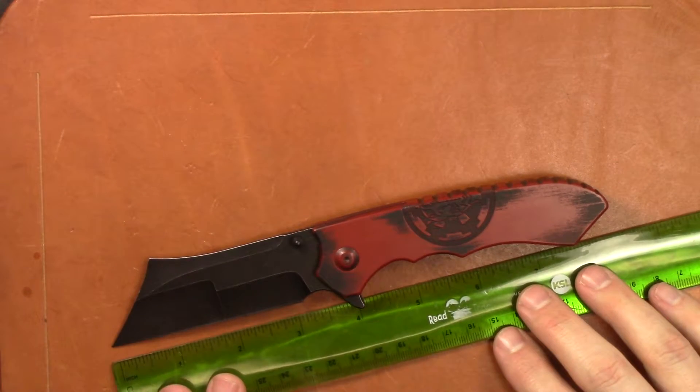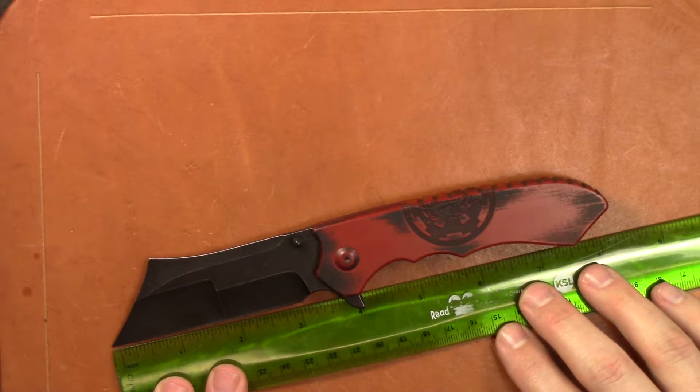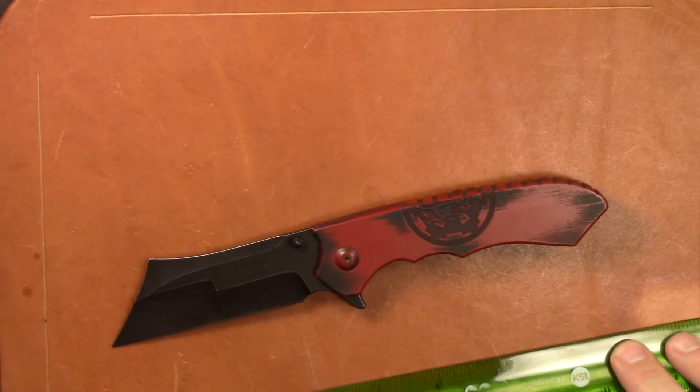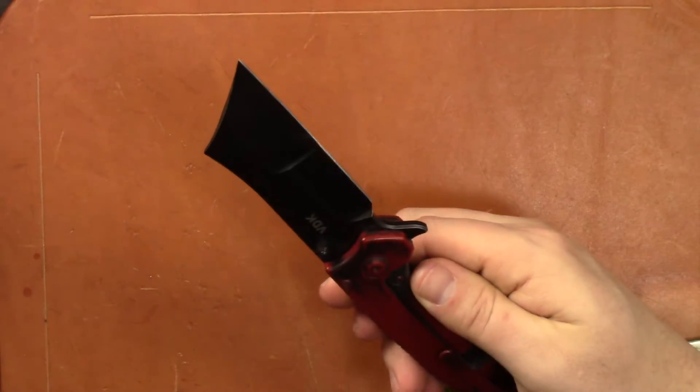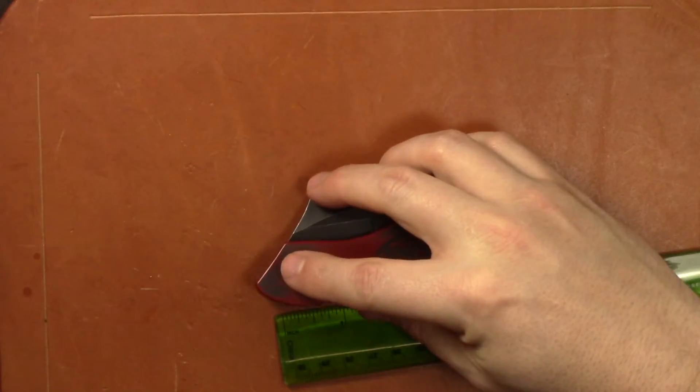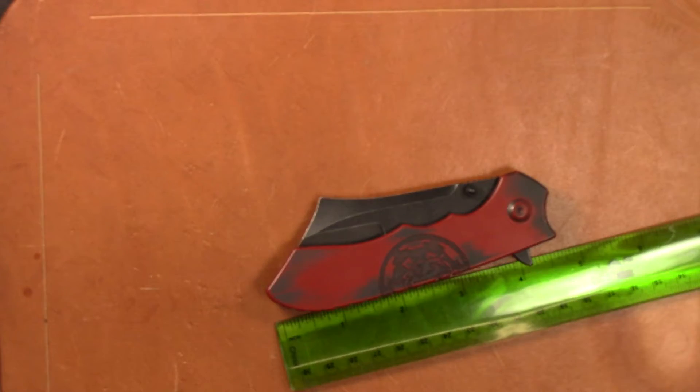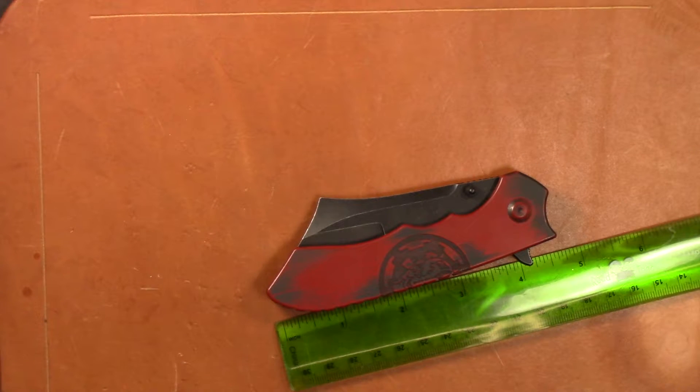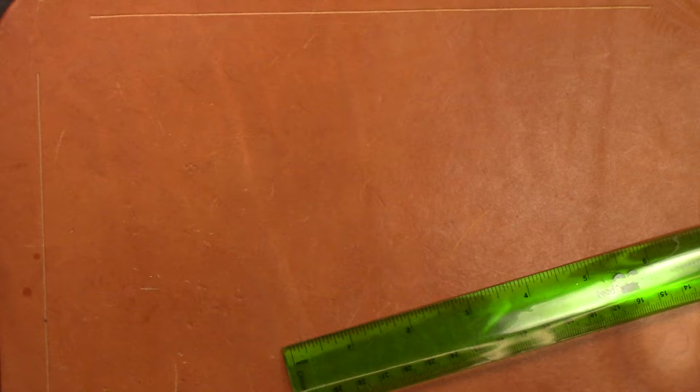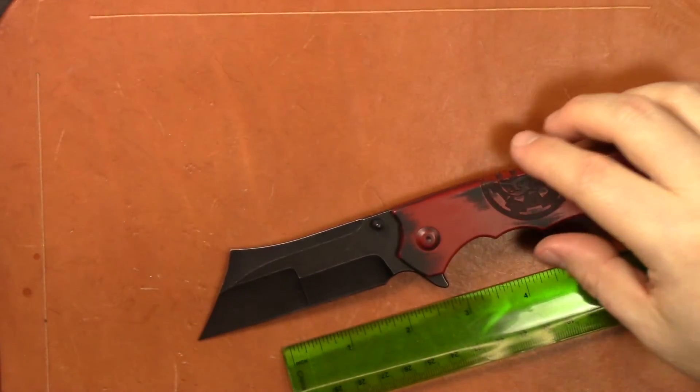So your blade length on this is going to be roughly four inches. If you go from the tip to the flipper tab it is exactly four inches. Your cutting edge though is more like three and a quarter inch. This has been cerakoted. I'm not exactly sure, let me verify what the blade steel is real quick. I think it's S35VN or M390. Your closed length on this is going to be about four and three quarters inches. They usually hide the blade steel marking if it's We, they tend to hide it on the top of the flipper tab or somewhere. I don't see it anywhere.